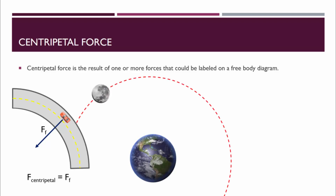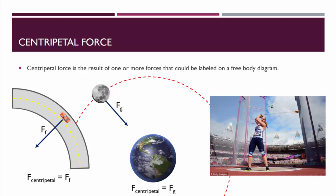For the moon in orbit around the earth, the force that keeps the moon traveling in a circle is the force of gravity. In this case, we would say that the centripetal force equals the gravitational force. In this final example, an athlete participates in the hammer throw. The force that keeps the mass traveling in a circle is the tension force in the rope. In this case, we would say that the centripetal force equals the force of tension.